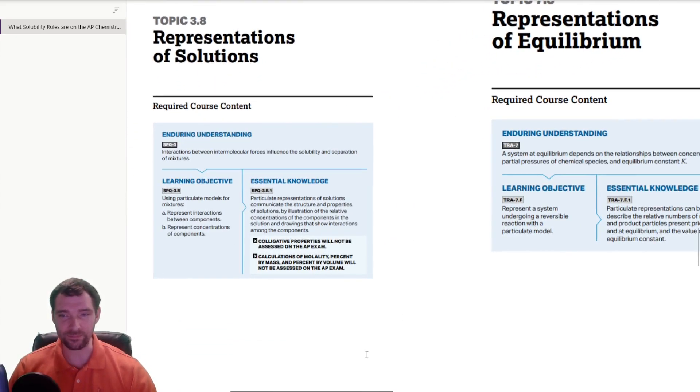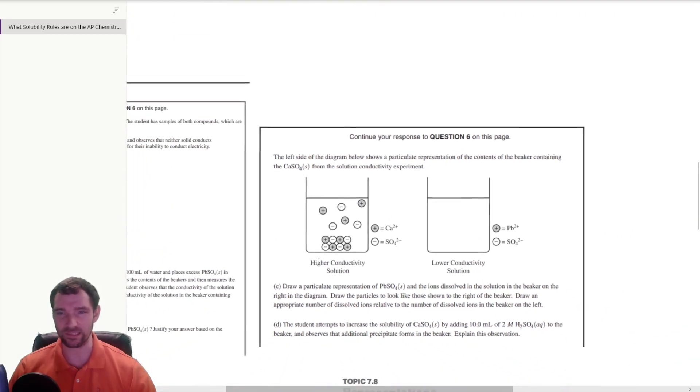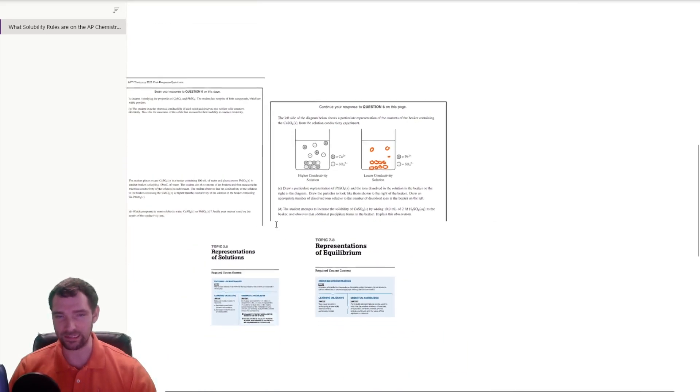That's much more important in this exam than knowing what is precipitating. It's knowing how that stuff is represented in models. You can see the standards here where you need to be able to represent interactions between compounds and concentrations, parts of a solution and a precipitant. It's really important to conceptually understand how to represent these things and draw in different numbers of ions to show things being more or less soluble.